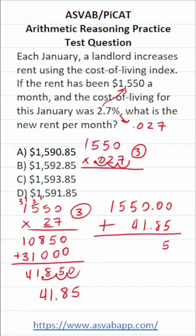0 plus 5 is 5. 0 plus 8 is 8. Drop down your decimal in place. 0 plus 1 is 1. 5 plus 4 is 9. 5 plus nothing is 5. 1 plus nothing is 1.